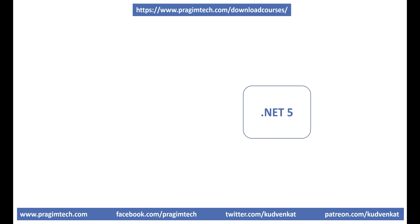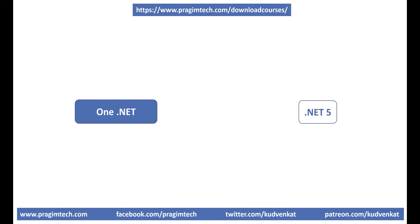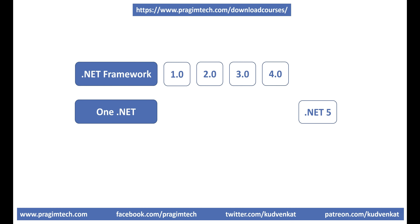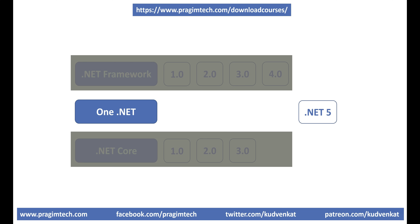What is .NET 5? .NET 5 is the next major release of .NET Core following 3.1. You might be wondering, why is it not called .NET Core 4.0? Why is it called .NET 5? There are two reasons. Version number 4.0 is skipped to avoid confusing this new .NET 5 with the traditional .NET Framework 4.0. The word Core is dropped from the name to emphasize that .NET 5 is the main and one implementation of .NET going forward. Just like .NET Core, .NET 5 is also cross-platform, but it supports many more types of apps and platforms than .NET Core or .NET Framework.